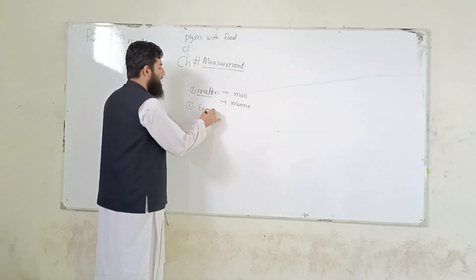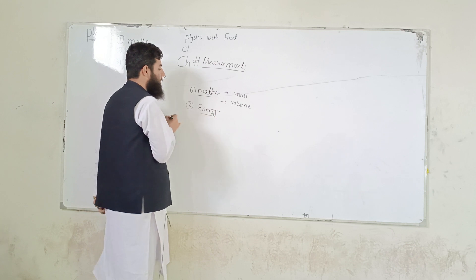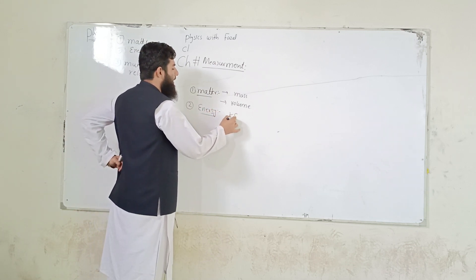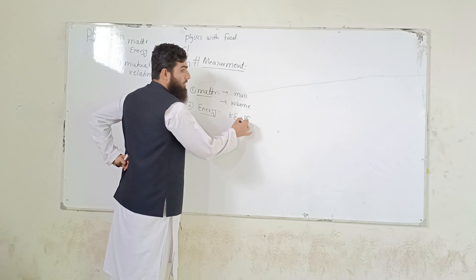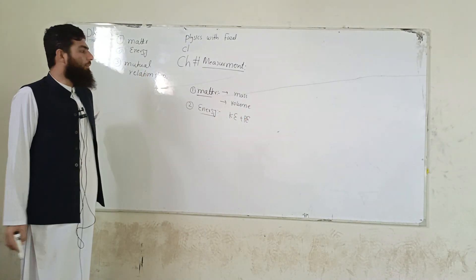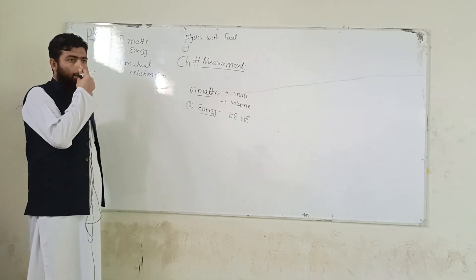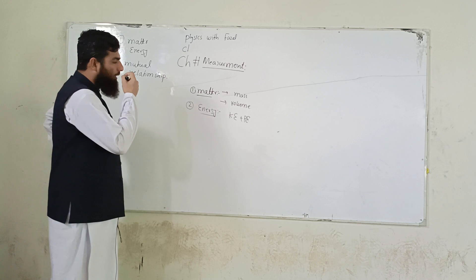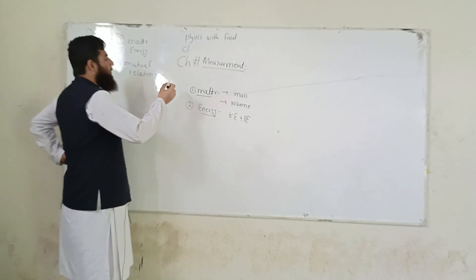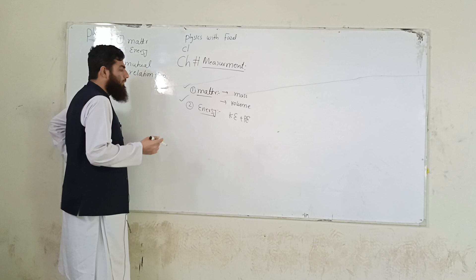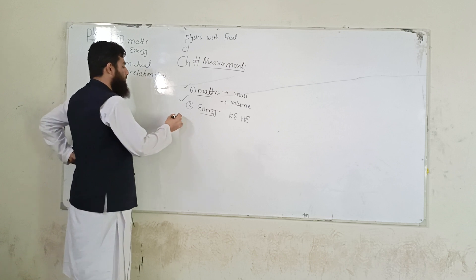Energy ہم نے پڑھا ہے — ہر وہ چیز ability to do work۔ اس میں ہمارے پاس kinetic energy اور potential energy شامل ہے۔ کام کرنے کی صلاحیت کو ہم energy کہتے ہیں۔